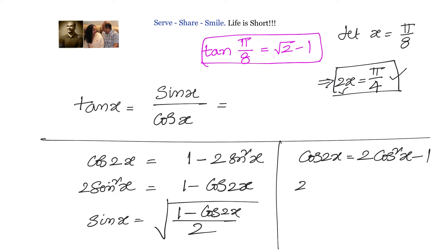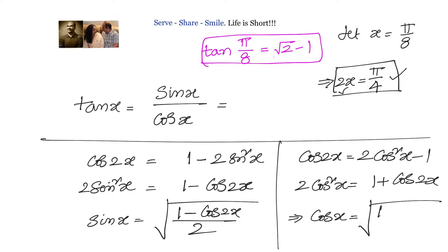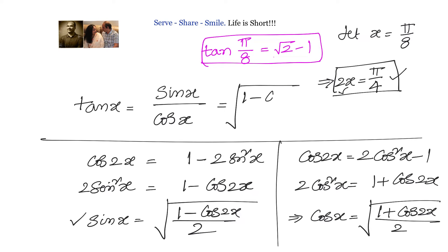From the second identity, cos(x) = √((1 + cos2x)/2). So sin(x) = √((1 − cos2x)/2) and cos(x) = √((1 + cos2x)/2). Therefore, tan(x) = sin(x)/cos(x), and the 2s cancel, giving tan(x) = √((1 − cos2x) / (1 + cos2x)).